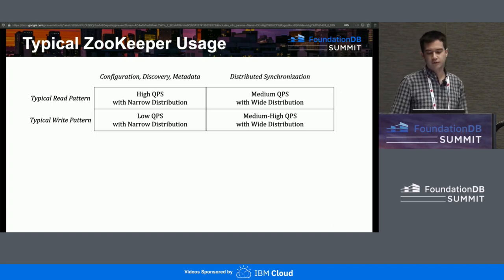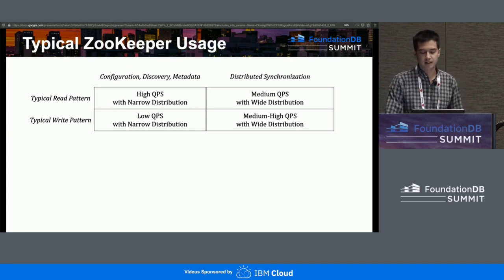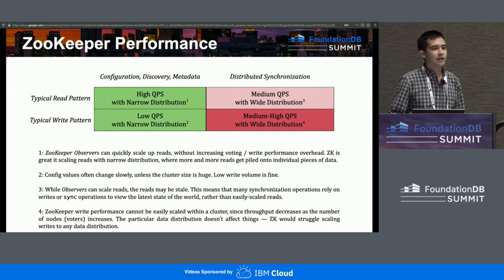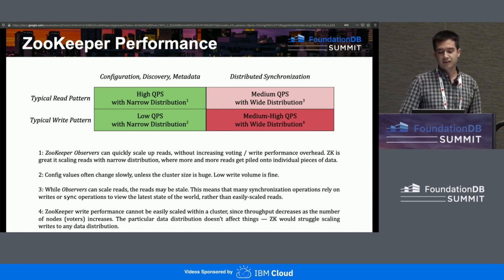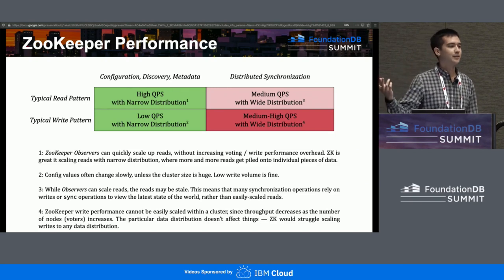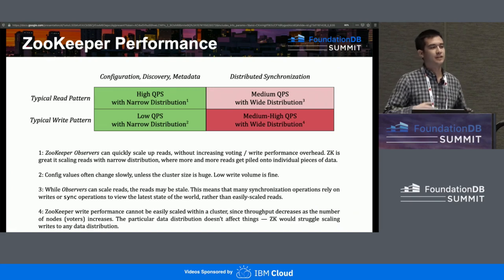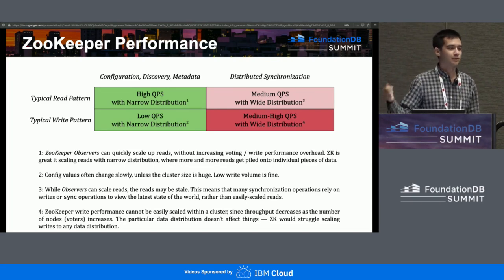The other thing Zookeeper is used for is distributed synchronization. Out of the box it doesn't give you a lot of these things, but it gives you all the tools to write your own, like leader election protocols, mutexes, and semaphores. However, Zookeeper does not scale writes particularly well, so as an application grows you don't have a way to scale write throughput — adding an extra instance to your Zookeeper ensemble actually brings total throughput down.